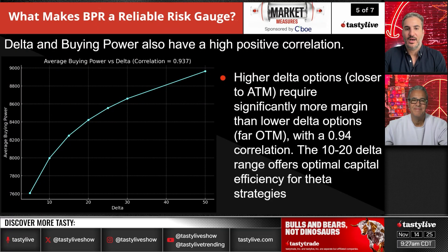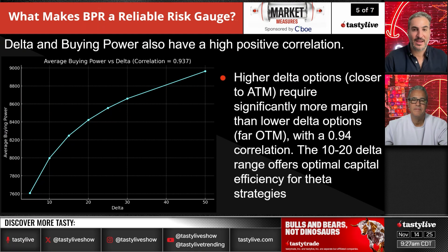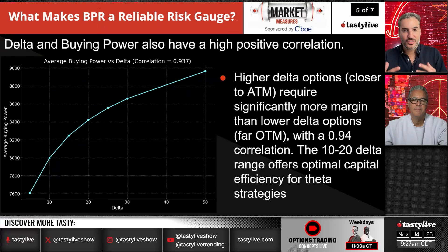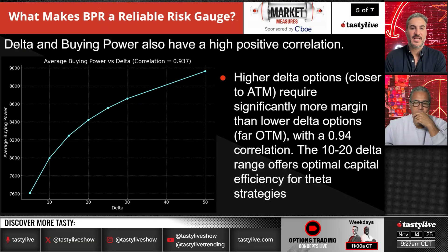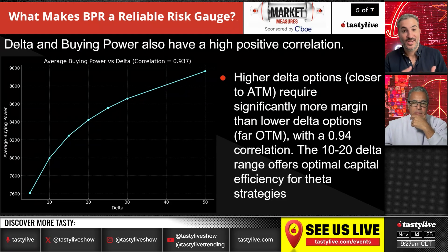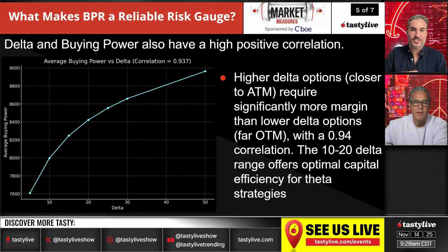Now we get into delta and buying power. You'd expect a high positive correlation — delta is a measure of risk. With a 50-delta option you have more exposure to the underlying than a 5-delta option. Higher delta options closer to the money require significantly more margin than lower delta options. Delta is relative to the size of the position — when sizing bigger, you're going to use more capital, and that scales pretty much linearly.